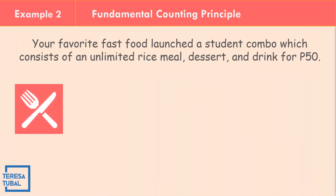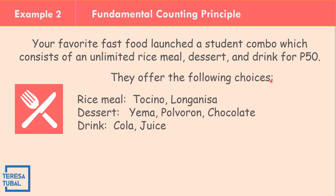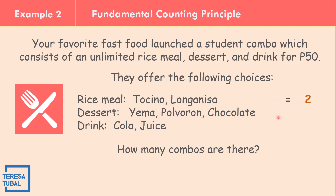In example number two, your favorite fast food offers a student combo for 50 pesos consisting of an unlimited rice meal, dessert, and drink. The rice meal choices are Tosino and Longganisa — two options. The dessert choices are yema, polvoron, and chocolate — three options. The drinks are cola and juice — two options. How many combos are there?